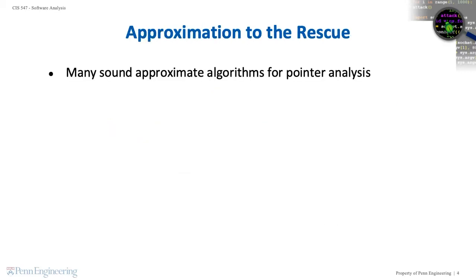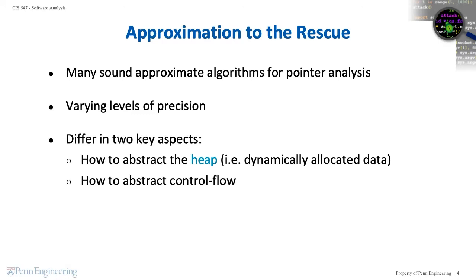There are many sound but approximate algorithms to the problem of pointer analysis. All these approximate algorithms generate false positives in certain circumstances, but they differ in their precision, that is their false positive rate. The approximations that these algorithms perform differ in two key aspects: how they abstract program data — in particular dynamically allocated data, which we call the heap — and how they abstract control flow. Pointer analyses typically ignore control flow entirely and instead look at the program as a set of unordered statements. We call this a flow insensitive analysis.